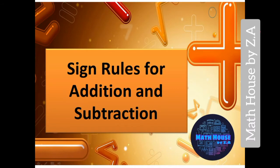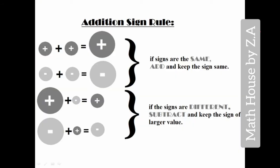You will learn about how to work with signs and how to add and subtract terms with different signs. Here are the rules for addition. For the first two categories, if the signs are the same, add and keep the same sign. That means if you add two positive numbers, you plus them and the answer will be positive. If you have two numbers with negative signs, for example minus one plus minus two, you add both numbers and the answer will be with a negative sign.